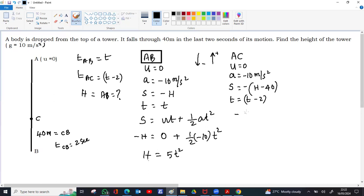So minus of H minus 40 equal to 0, ut is 0, half g is minus 10, the time is t minus 2 whole square.